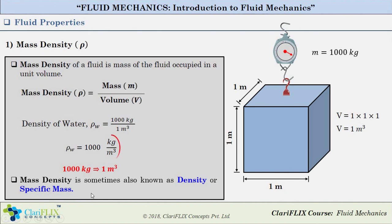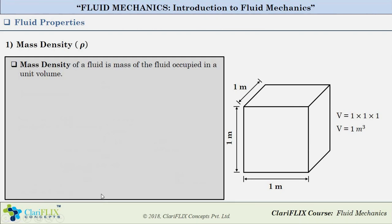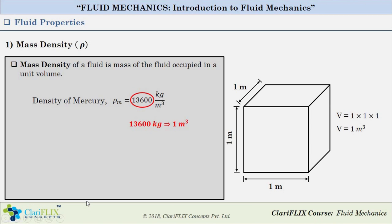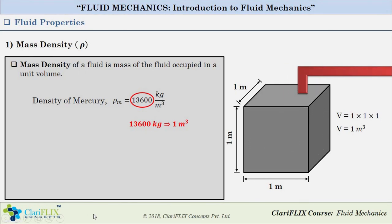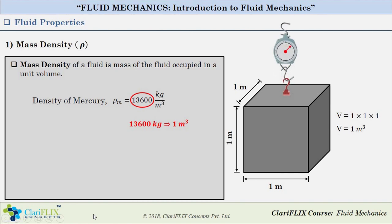As another example, the density of mercury is approximately 13600 kg per meter cube, which means that 1 meter cube of mercury has 13600 kg of mass. Therefore, a box of 1 meter cube volume filled completely with mercury has 13600 kg of mass.